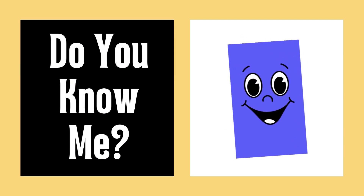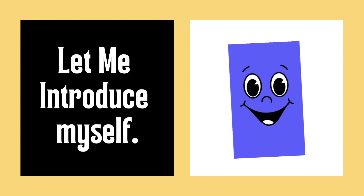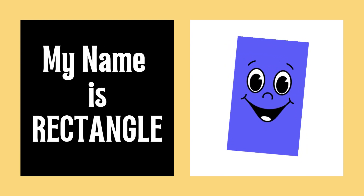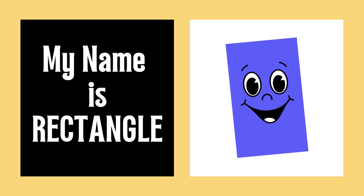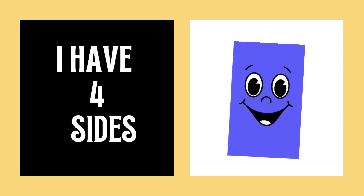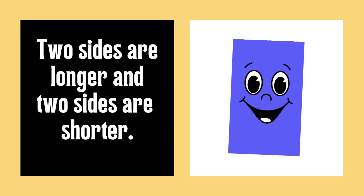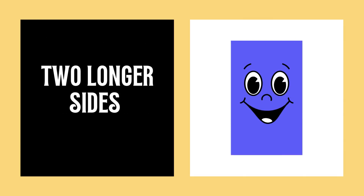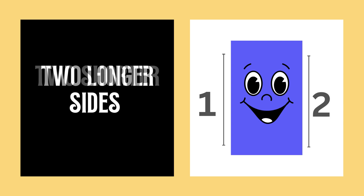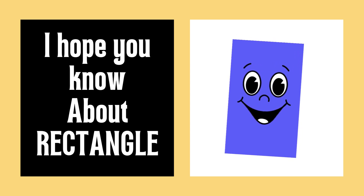Hello friends, do you know me? Let me introduce myself. My name is Rectangle. My color is blue. I have four sides. Two sides are longer and two sides are shorter. Two longer sides: one, two. Two shorter sides: three, four. I hope you know about Rectangle.